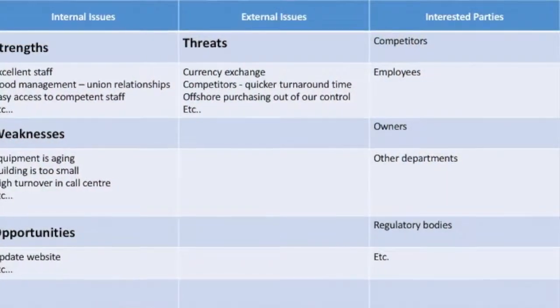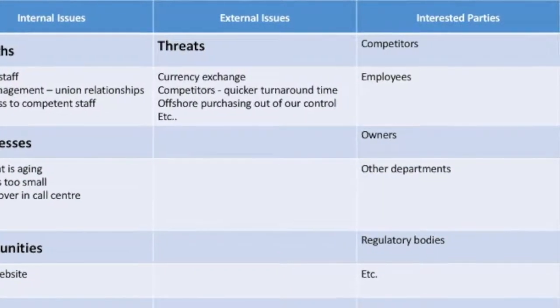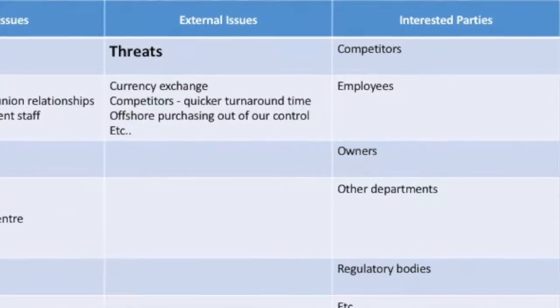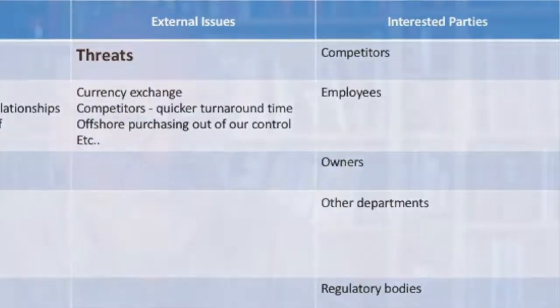Once that's done, you can figure out who the interested parties are. Sometimes they might line up. For example, an internal strength might be excellent compliance to regulatory requirements. If that were the case, the interested party to go along with that strength would be a regulatory body. Obviously, your customers are interested parties, your competitors are interested parties, and so on.